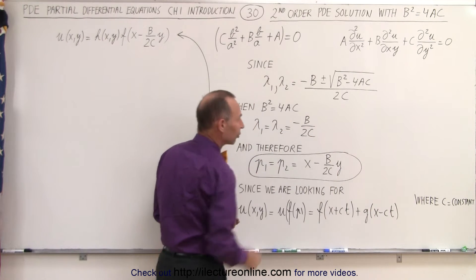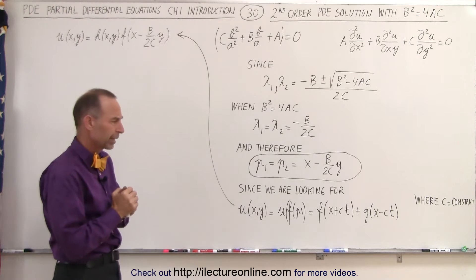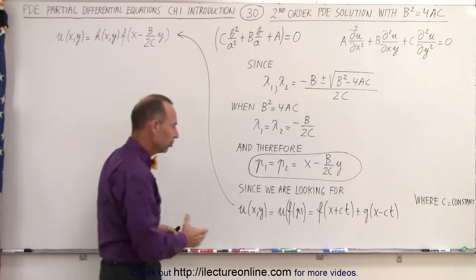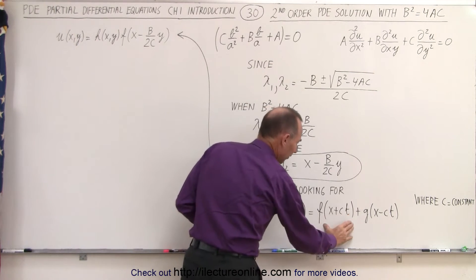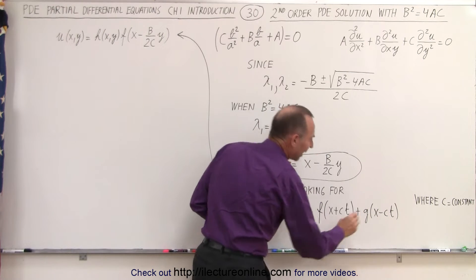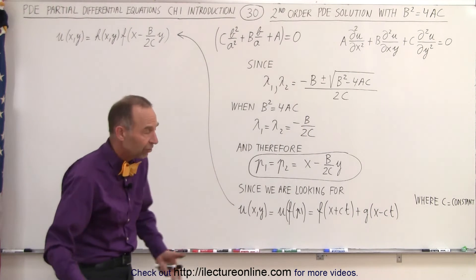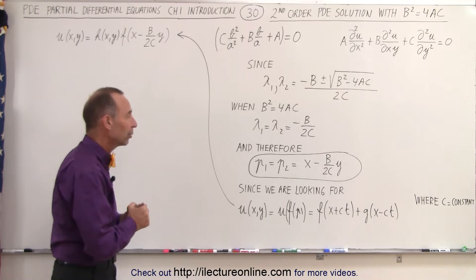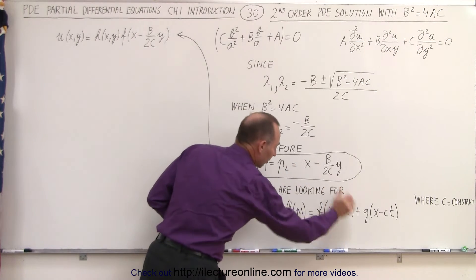Since both of those are equal, we only have one coefficient here. But we want to find the solution where we have it in this form: f of x plus ct plus g of x minus ct, where c is just some constant that we need to find. So how do we turn something like this into something like that?